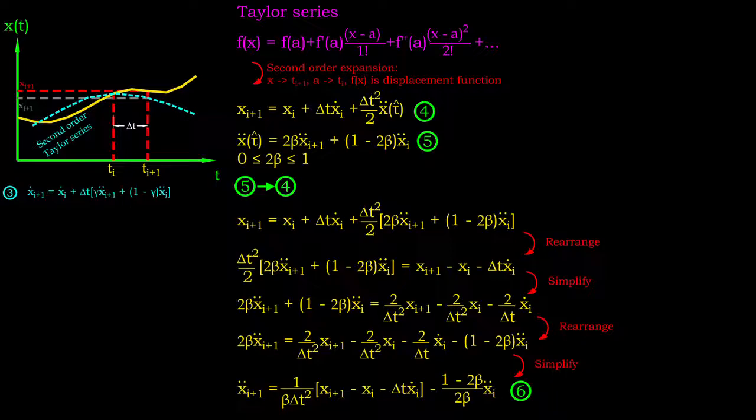This time, we should express the acceleration at instance i plus 1 in terms of other parameters. By doing so, we obtain the solution for acceleration for the instance of i plus 1.